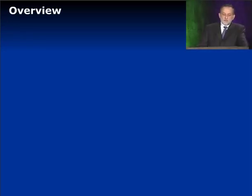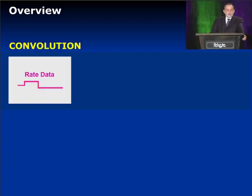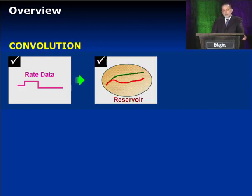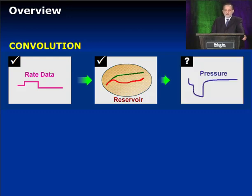Before we talk about deconvolution, we really must talk about convolution. In reservoir engineering, we often have production data, so we know the rates. We feed that information into our reservoir model, and we can calculate the pressures corresponding to that rate sequence. That's called convolution.